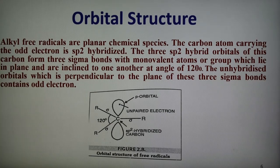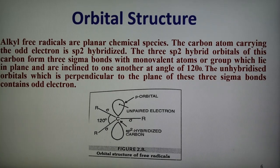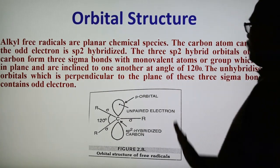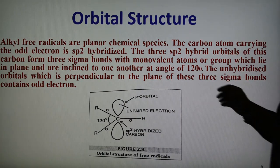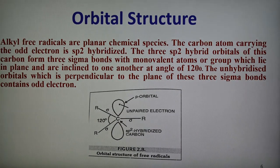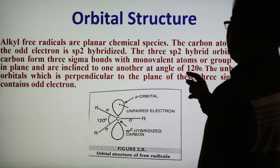Next part is the orbital structure. In case of the orbital structure of the free radical, alkyl free radicals are planar chemical species. The carbon atom carrying the odd electron is sp2 hybridized. sp2 means the shape is trigonal planar. The sp2 hybrid orbitals of this carbon form three sigma bonds with monovalent atoms or groups, which are in a plane and inclined to one another. The bond angle in case of trigonal planar is 120 degrees.